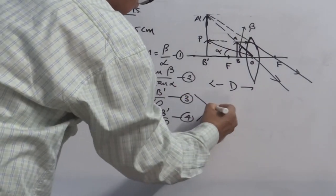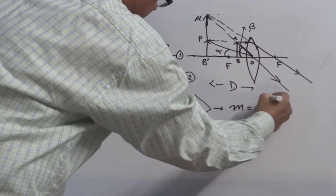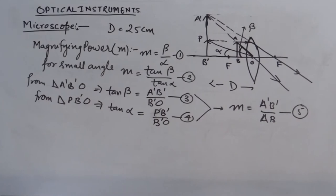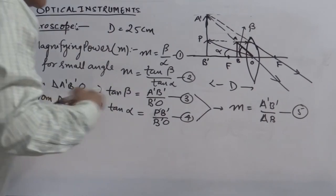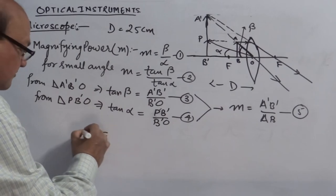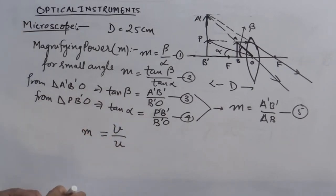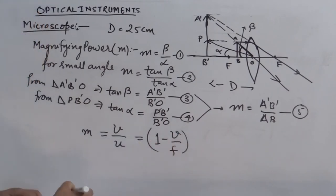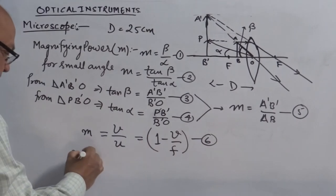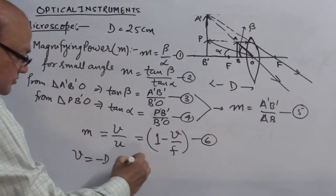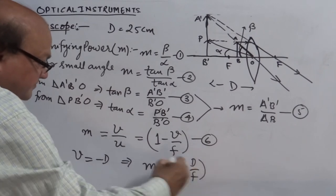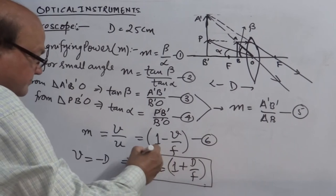Substituting these into the equation, M equals A'B' over AB — the normal magnification formula for a convex lens, expressed as v over u. This can be further modified: since v equals minus D, we get M equals 1 + D/f. This is the magnifying power of the simple microscope.